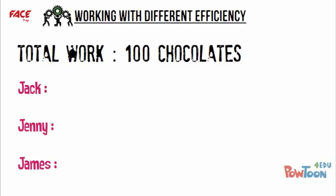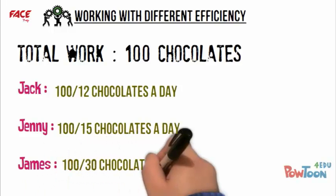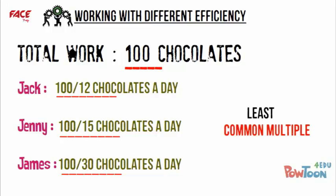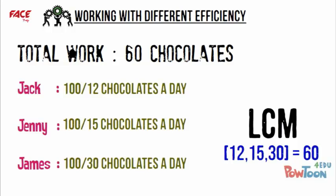In this case, if Jack can eat 100 chocolates in 12 days, then he can eat 100/12 chocolates in 1 day. Jenny and James will take 100/15 and 100/30 chocolates each day — but that gives fractions! What number should we assume to avoid fractions? We should assume a number that is a common multiple of the time taken by the individuals — in fact, the LCM. The LCM of 12, 15, and 30 is 60.